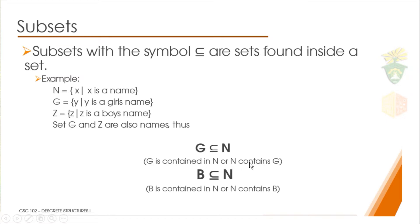Similarly, Z should also be a subset of N, since Z contains all the boys' names and the set N could contain boys' names. So we can say that Z is contained in N, meaning Z could be inside N or N contains Z. That is basically what a subset is.